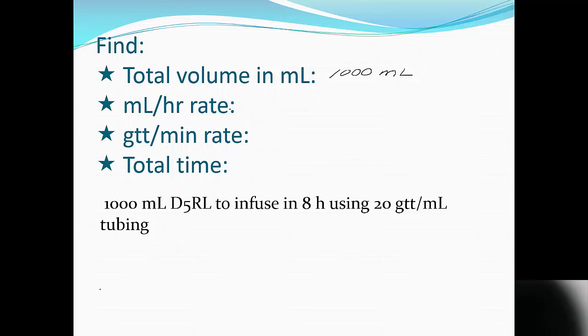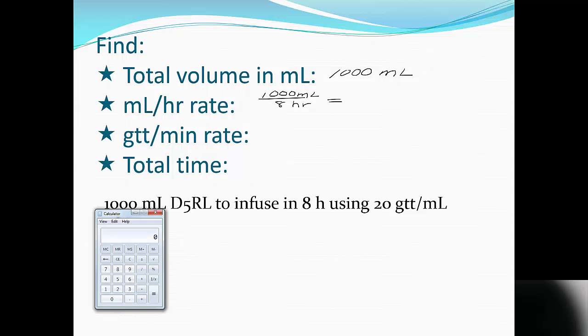Next thing that it's asking me for is the milliliter per hour rate, and I know how to do that. I just take the 1,000 milliliters and divide it by the 8 hours, and that will give me milliliters per hour just as I have it set up. So go to my calculator, and we have 1,000 divided by 8, and comes out even 125 milliliters per hour.